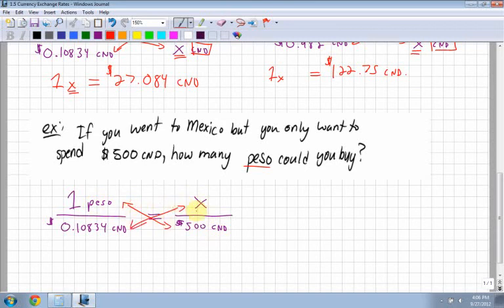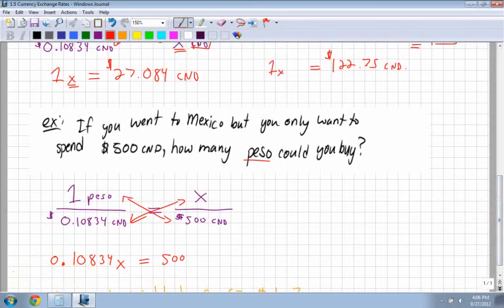So I have 0.10834 times x. So 0.10834x is equal to, remember I always separate with an equal sign when I cross multiply, 1 times 500 is just 500. Now you have to do a little bit of algebra. So the easiest way is to think of where is the x. What's the number in front of x right there? I want to divide by that value. So I divide by 0.10834 on both sides.